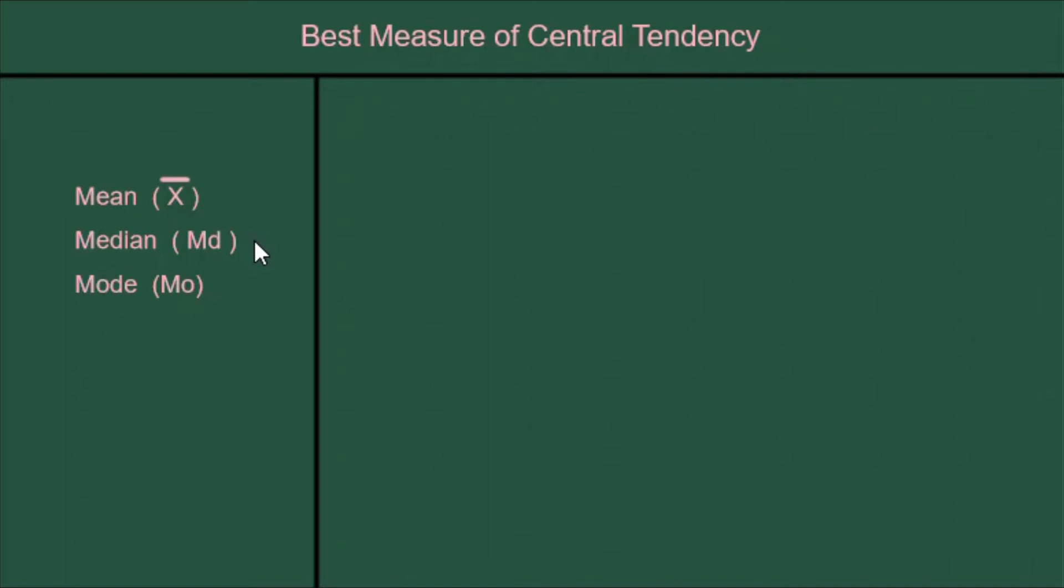The median is the middle value. If you arrange all the values from smallest to largest, the very middle one is the median, and the mode is the most popular value. It's the value that appears the most often in the set of data.